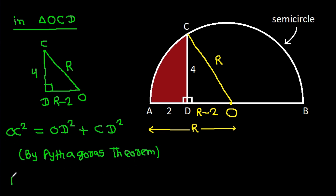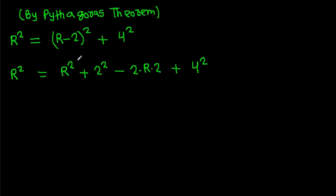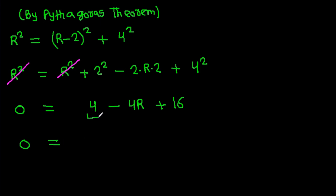So OC squared is R squared, which equals (R minus 2) squared plus 4 squared. Expanding: R squared equals R squared plus 4 minus 4R plus 16. R squared cancels, giving 0 equals 4 minus 4R plus 16, so 0 equals 20 minus 4R.